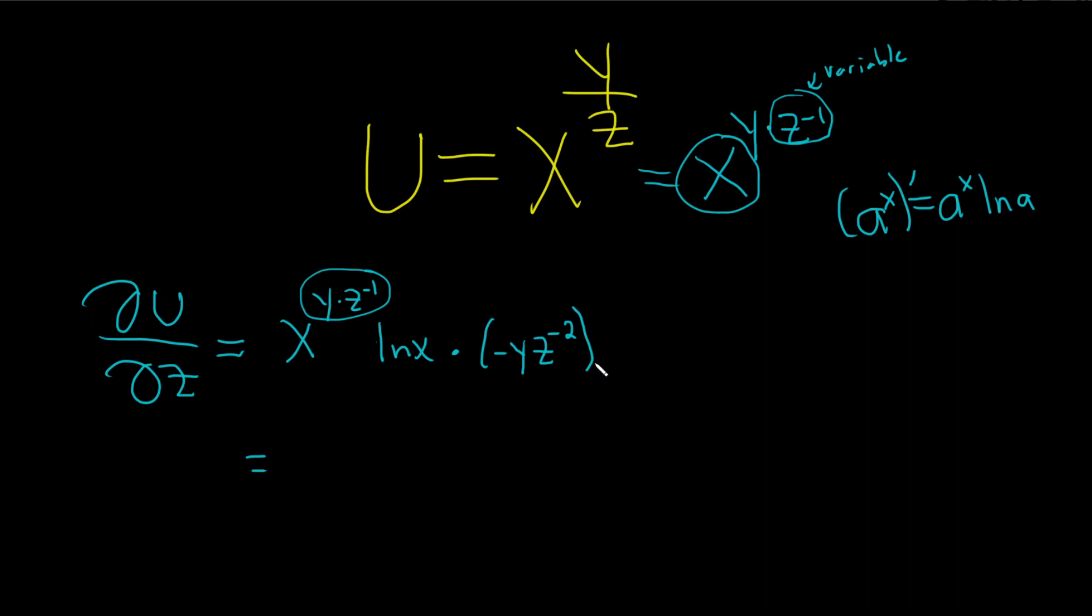And so this we can rewrite as follows. This is negative y, x to the y over z, ln x, and then we can bring down the z squared.